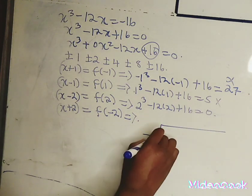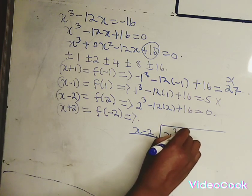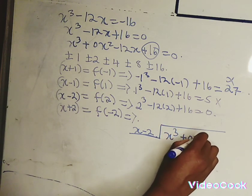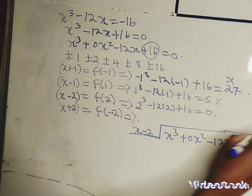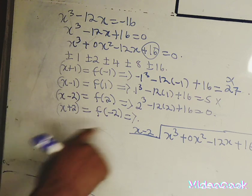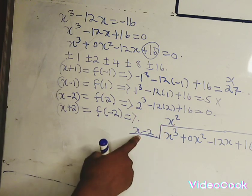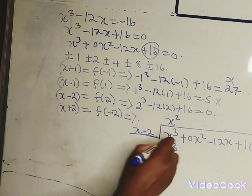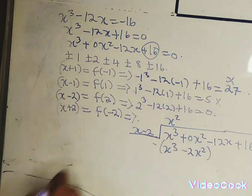Since x minus 2 is a factor, I prefer to use the factor theorem. Let's write x minus 2 and divide into x cubed plus 0x squared minus 12x plus 16 — I prefer writing the 0x squared so that dividing is easy. x into x cubed goes x squared; x squared times x gives x cubed, and x squared times minus 2 gives minus 2x squared.